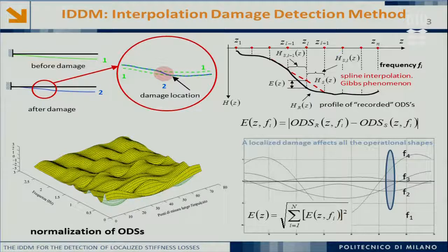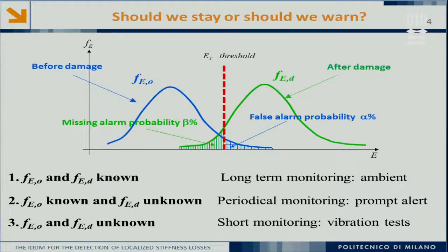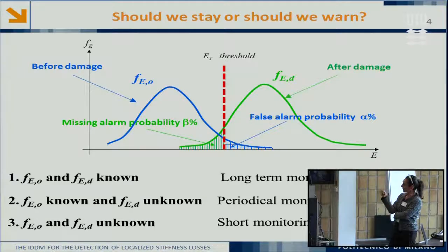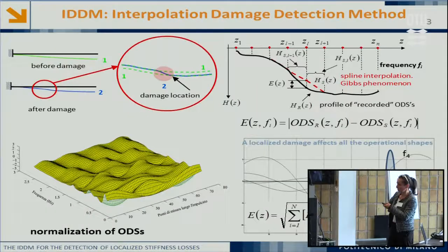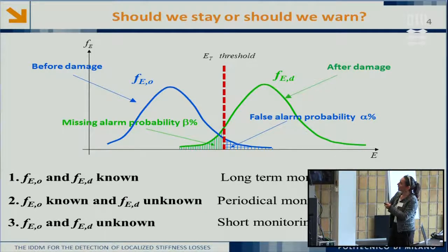The problem is that this damage feature will exhibit variations even if there is no damage, due to the usual random sources. There are mainly three monitoring situations. In short-term monitoring, we may have a test before in the original configuration and another in the inspection phase — very limited data — so there is no way we can find the distribution of the damage feature in either the original or damaged configuration.